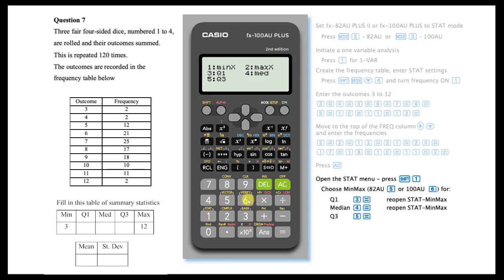This allows you to calculate the values that make up the five-number summary, including Q1, the median, and Q3. Make your selection followed by equals.